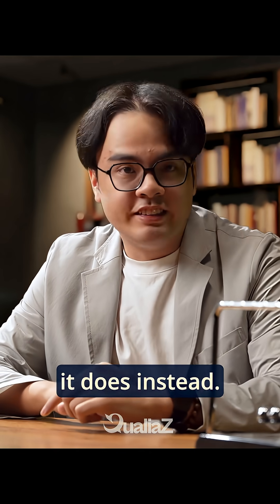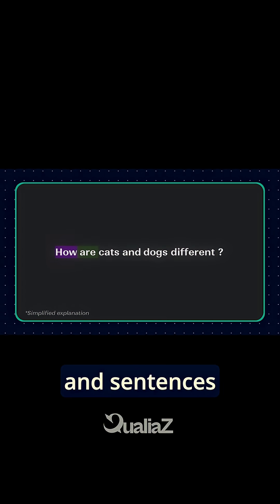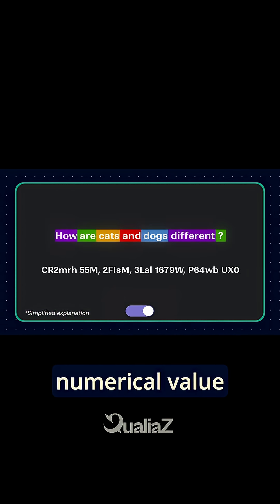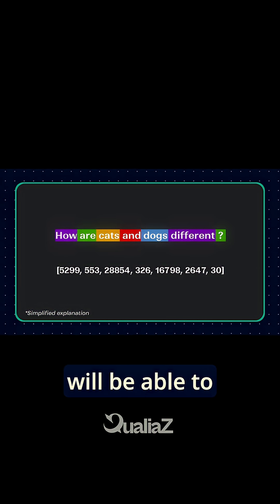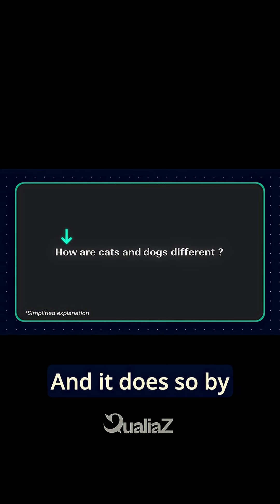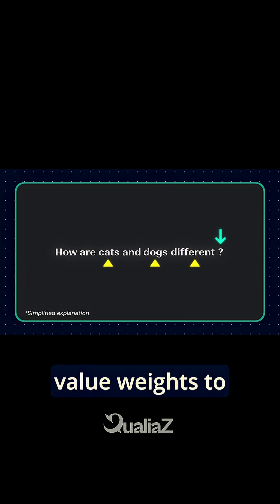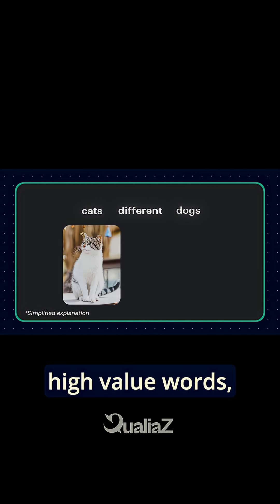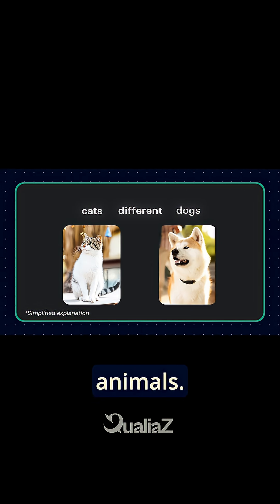So here is what it does instead. AI will break down our prompts and sentences into chunks, into words. These words will be assigned numerical values, and it is only now that AI will be able to understand and know what we're looking for. It does so by assigning high value weights to important words. From these high value words, it knows that we're looking for a comparison between these two animals.